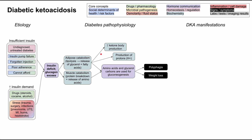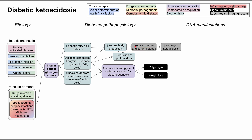Adipose catabolism also releases ketone bodies and protons, and there is a direct effect on ketone body production from hepatic fatty acid oxidation as well. This results in ketosis — increased presence of ketones in urine and serum — causing high anion gap ketoacidosis. All these ketones in the blood increase the anion gap. Excess protons make the blood acidic, depleting plasma bicarbonate. Increased ketone body production also causes the fruity odor characteristic of DKA, from acetone on the breath.